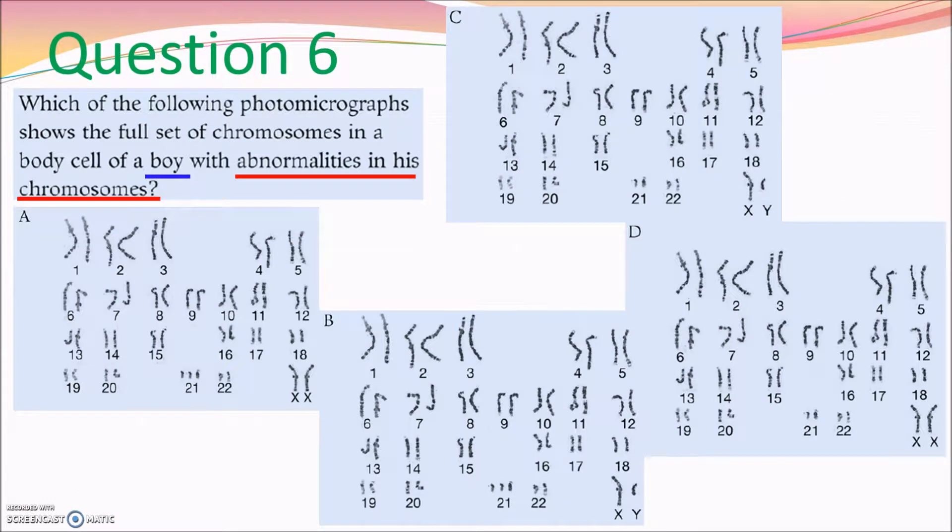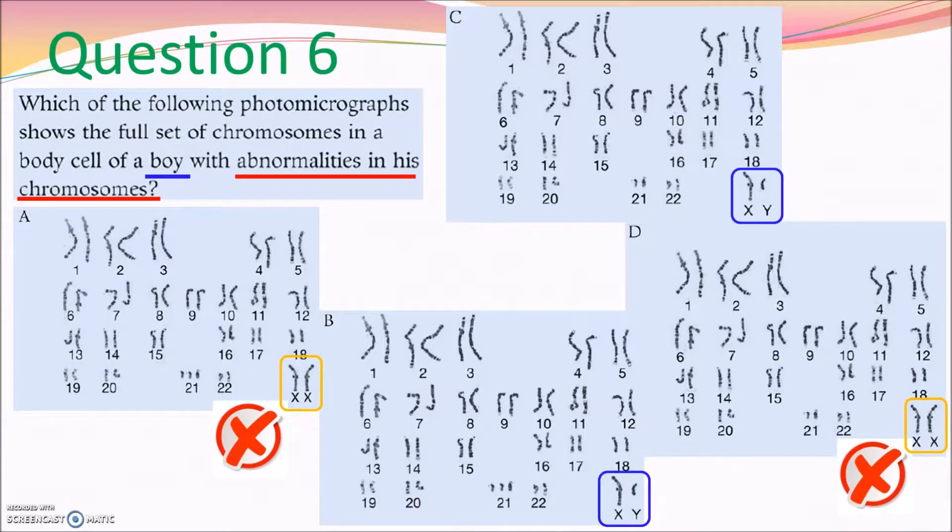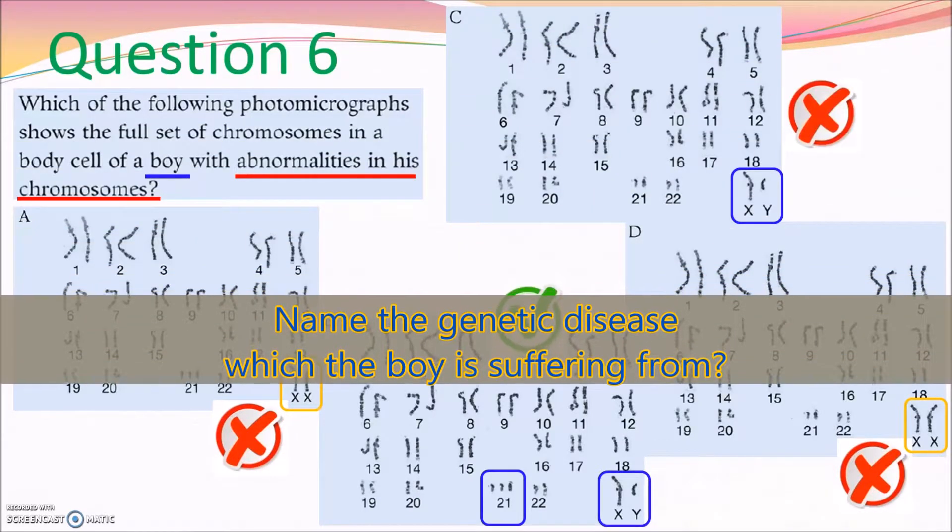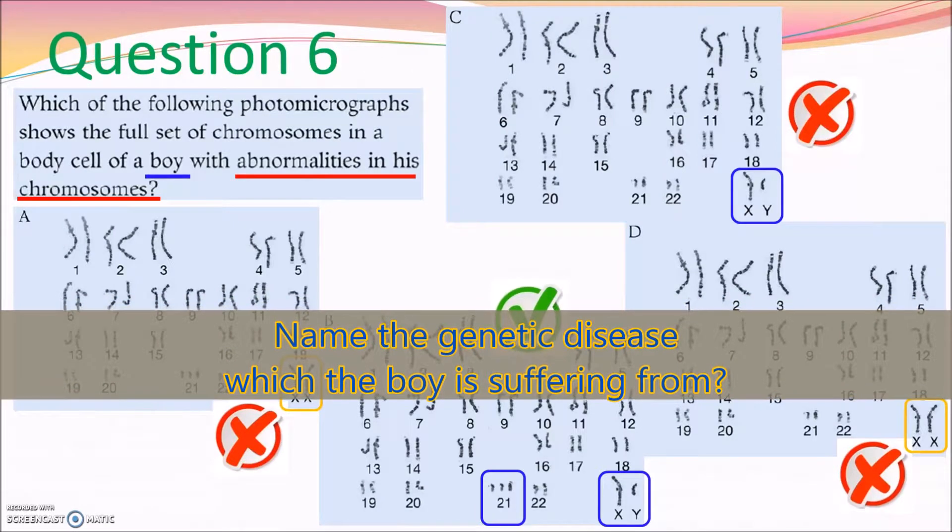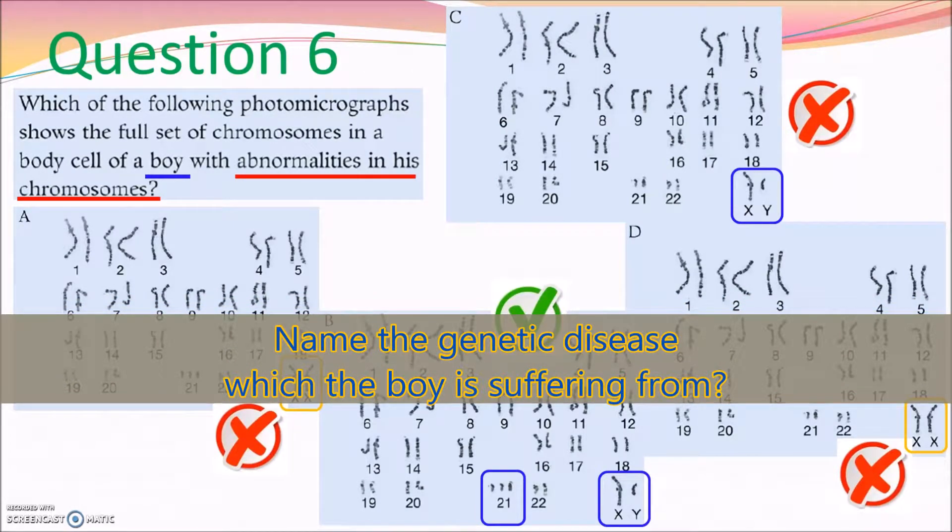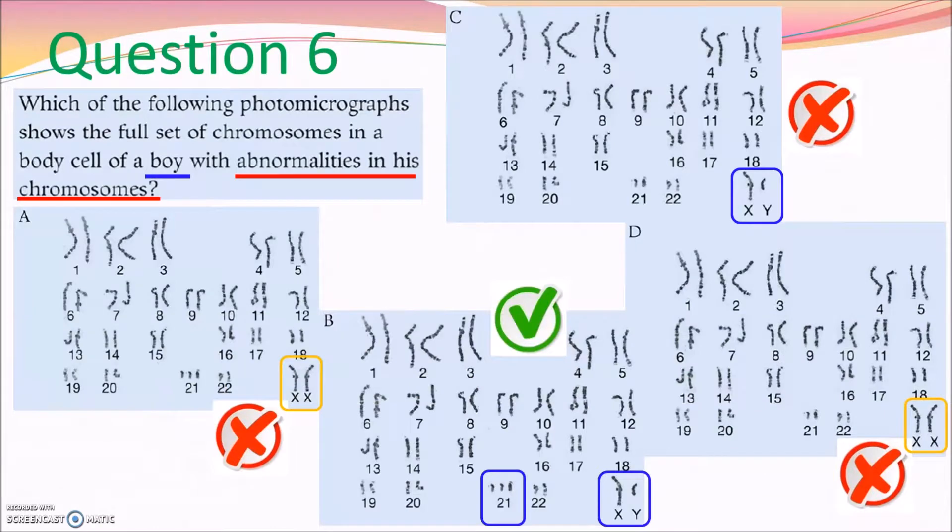In question 6, you need to find out which karyotype belongs to a boy with chromosome abnormality. Options A and D are eliminated because they belong to girls who have two X chromosomes. Options B and C show that XY chromosome, so they should belong to boys. However, only option B is correct. Since there are three 21st chromosomes, so can you tell me which genetic disease is he suffering? Leave your answer in the comment for the prize.